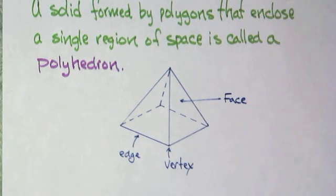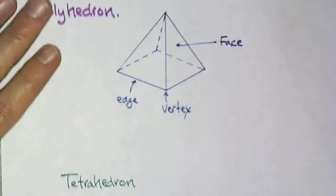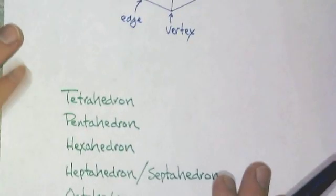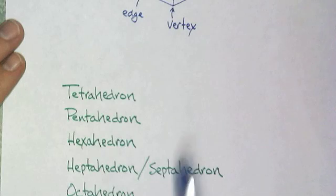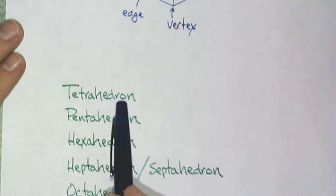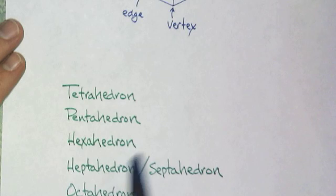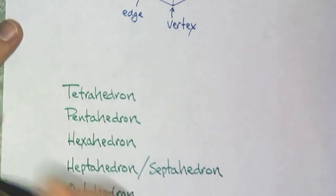And the other thing we need to talk about is how we classify polyhedron. We classify polyhedron the same way as we classified polygons. Polygons, we classify them by the number of sides. With polyhedron, we classify it by the number of faces. Some of the classifications are tetrahedron, pentahedron, hexahedron, heptahedron, septahedron, octahedron.